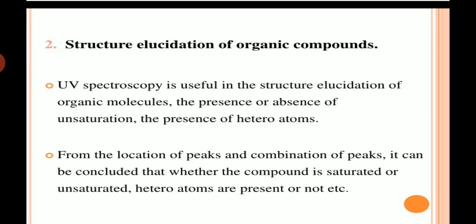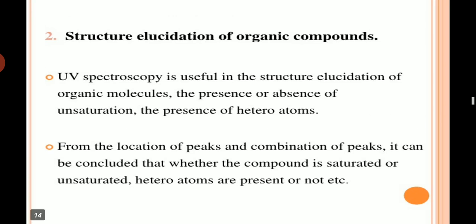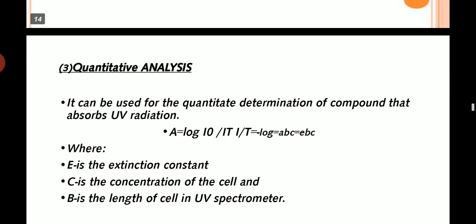Structure elucidation of organic compounds. UV spectroscopy is useful in the structure elucidation of organic molecules, the presence or absence of unsaturation, and the presence of heteroatoms. From the location of peaks and combination of peaks, it can be concluded whether the compound is saturated or unsaturated and whether heteroatoms are present or not in the structure of organic compounds.